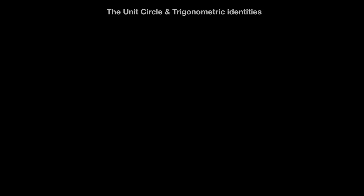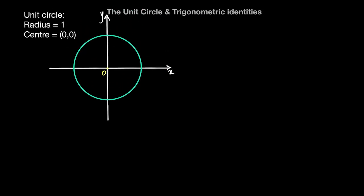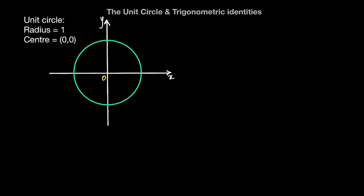Hey guys, so in this video we're going to talk about the unit circle and trigonometric functions. The unit circle is defined as a circle with radius 1 unit and center point (0,0) — in other words, the center point of the unit circle is the origin. Over here we have the unit circle with center point (0,0) and a radius of 1 unit.